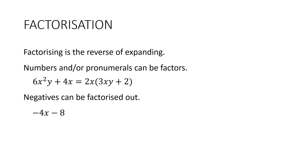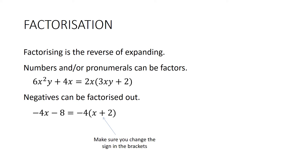Negatives can be factorised out. For example, −4x − 8: a common factor of both terms is negative 4. Negative 4 times what makes −4x? That's x. Negative 4 times what makes −8? Just like before where the sign changes from brackets, we want this to be plus 2. Check: minus 4 times x is −4x, and minus 4 times positive 2 is −8.